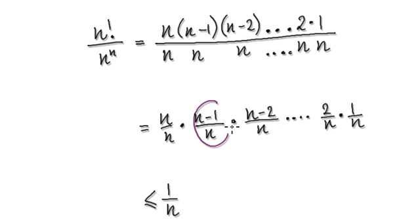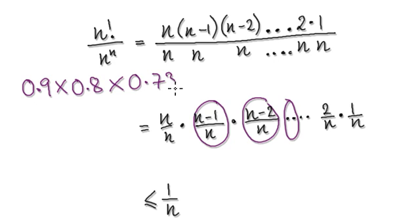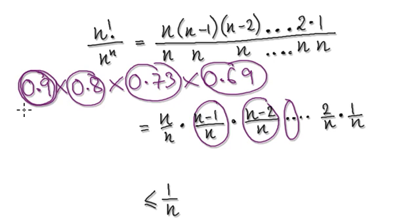So you've got less than 1, times less than 1, times less than 1. It's like 0.9 times a number that's smaller than 1 — say 0.8 times 0.73 times 0.69 and so on. You've got a number less than 1, times a number less than 1, times a number less than 1, times a number less than 1. It's just going to get smaller and smaller and smaller.